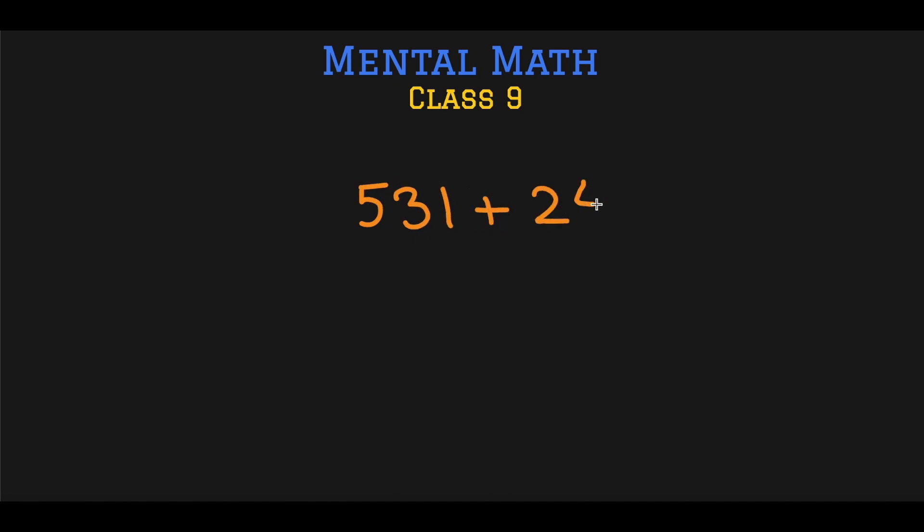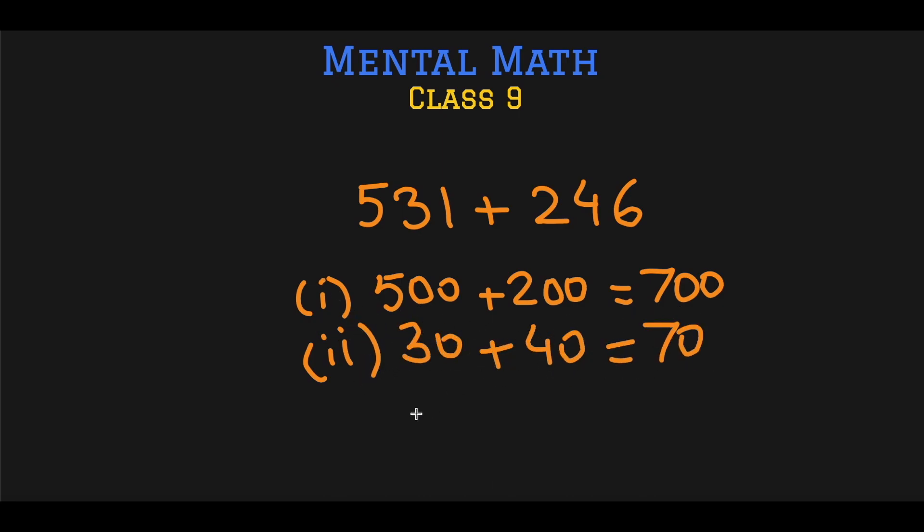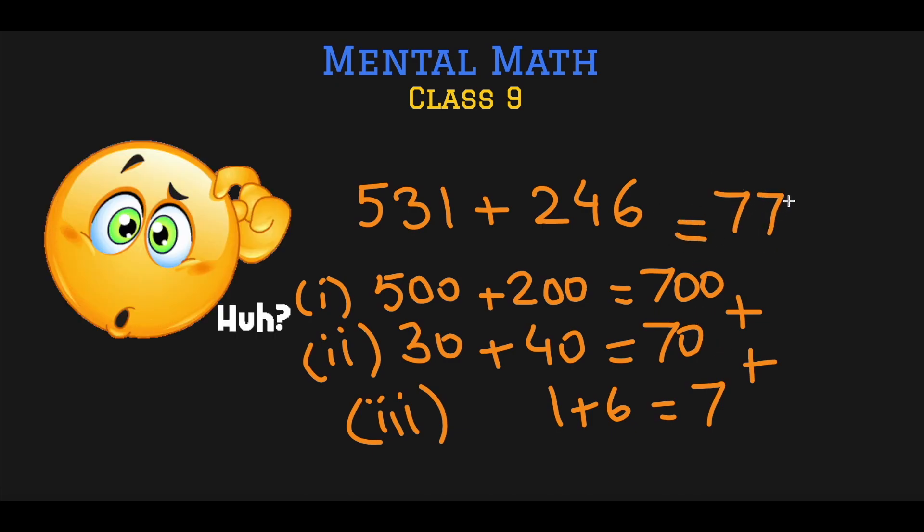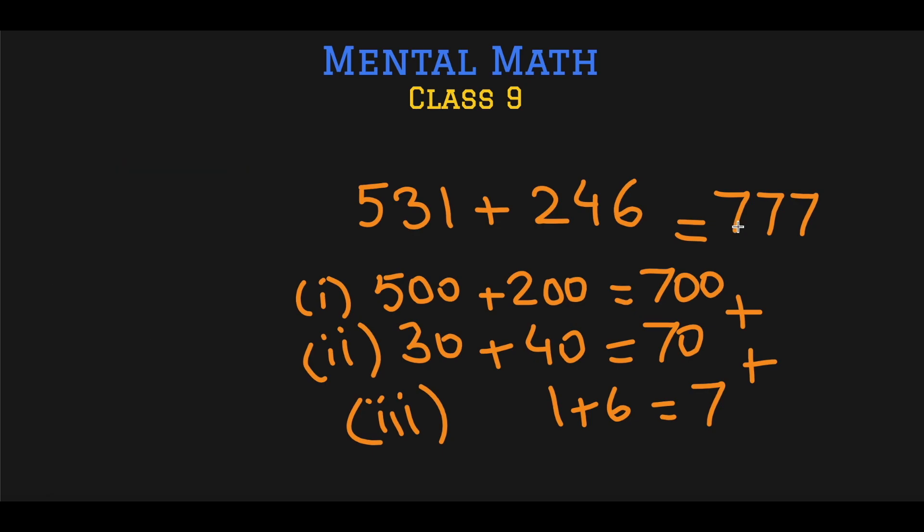Part 2, add the tens. Part 3, add the ones. This is turning out to be an interesting answer. So 700 plus 70 plus 7 is equal to 777. I did not do it on purpose, it just turned out this way.